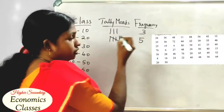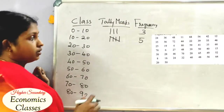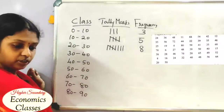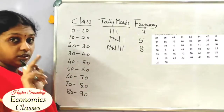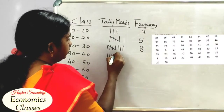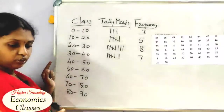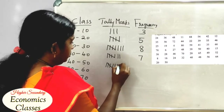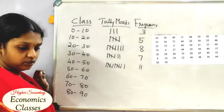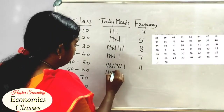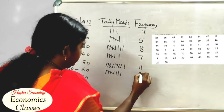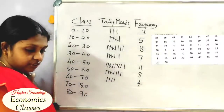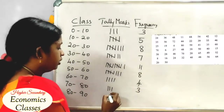The frequencies for each class interval are: 0–10 has 3, 10–20 has 18, 20–30 has 11, 30–40 has 8 (actually 50–60 is 8), 60–70 is 4, 70–80 is 3, 80–90 is 1.